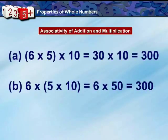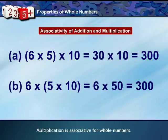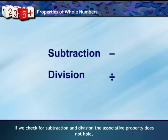Does the associative property also hold for multiplication? If we multiply 6 and 5 first and then multiply 10 to their product, we get the same result as multiplying 5 and 10 first and then multiplying by 6. This is called the associative property for multiplication of whole numbers. The associative property does not hold for subtraction and division.